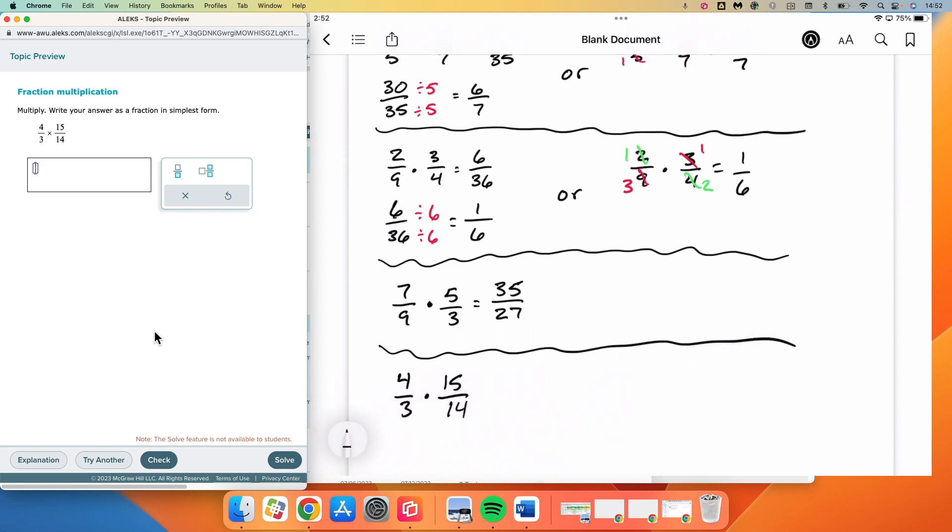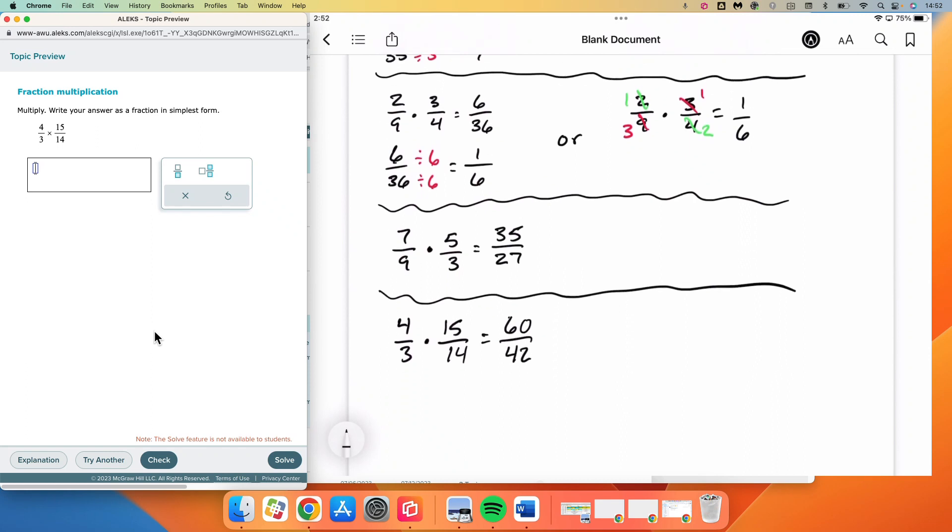And multiplying straight across, we will get 4 times 15 is 60, 3 times 14 is 42. We do need to see that 60 and 42 both do have some common factors. I see 2 as a common factor, but I also see 6, and so I want to choose the larger of the 2 each time because it will make the process go a little bit quicker. And 60 divided by 6 gives me 10, 42 divided by 6 gives me 7.